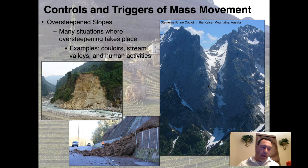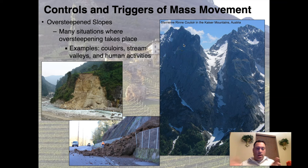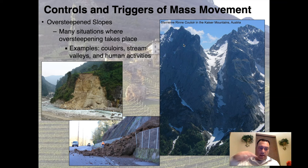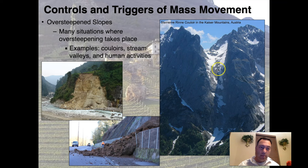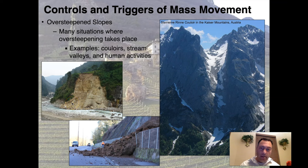Another way landslides are triggered is through over-steepened slopes. Geological environments where this happens include couloirs — a couloir is a high-angle valley in a mountain. They're well studied because many ski resorts are built around them. Stream valleys can also cause over-steepening where the stream undercuts the canyon wall; gravity then pulls material into the valley bottom. And despite the fencing put up here to hold back a landslide, it was too strong and broke through onto the road.